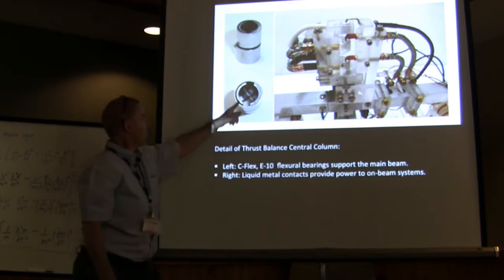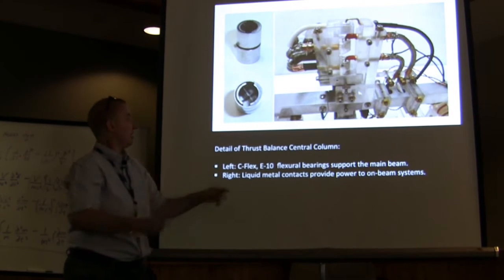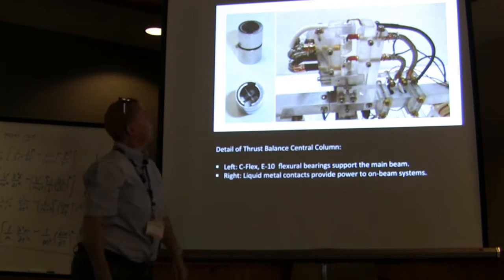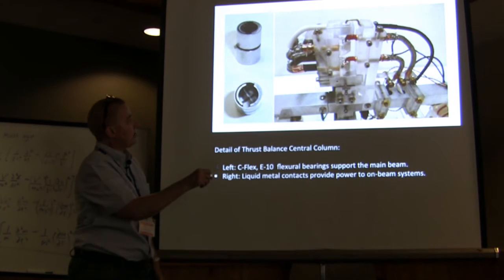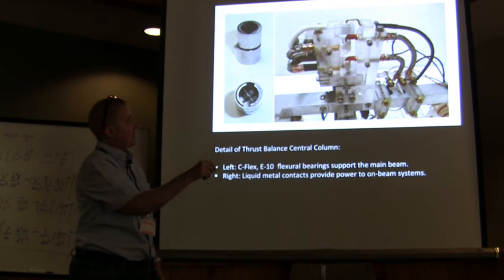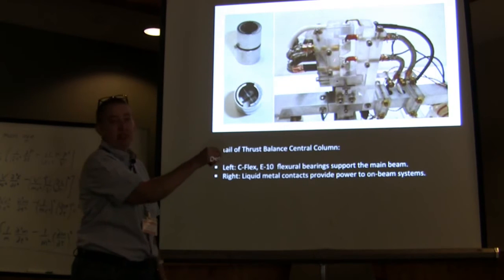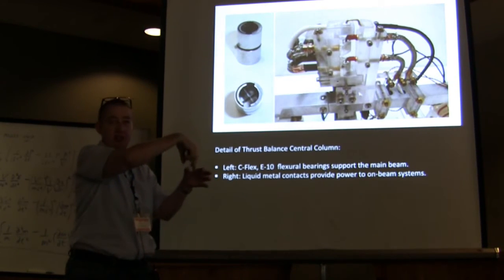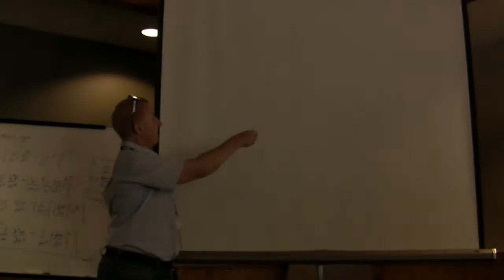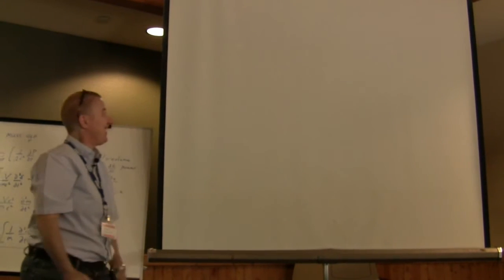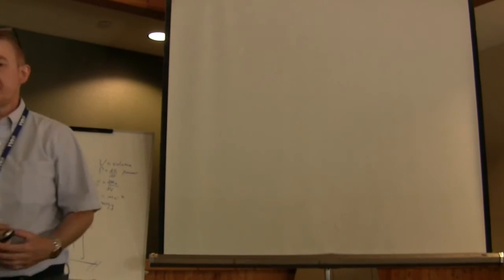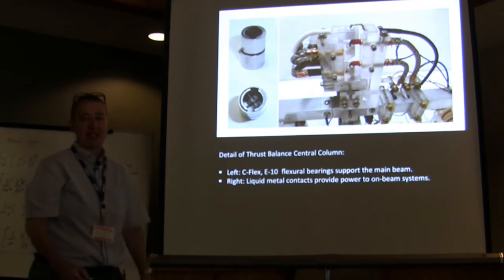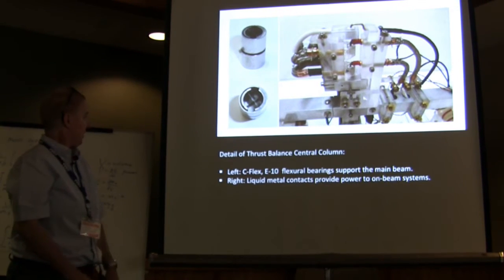The C-flex bearings are very simple — just two bits of metal across, and they just flex. One is on the bottom and one on the top, so the beam flexes in both directions. Power is delivered via galistan contacts — a cup of plastic with metal contacts — so there are no heavy power cables weighing down one side.